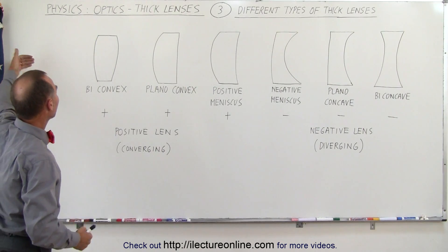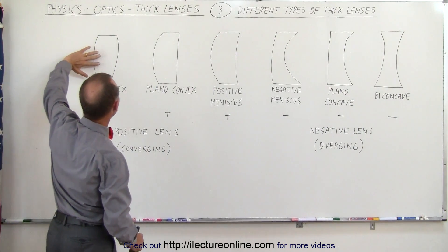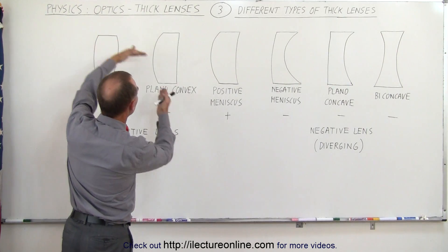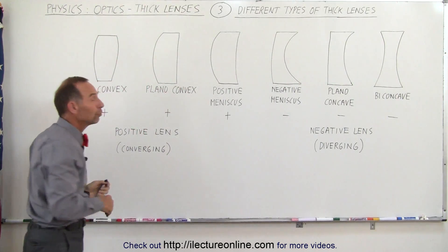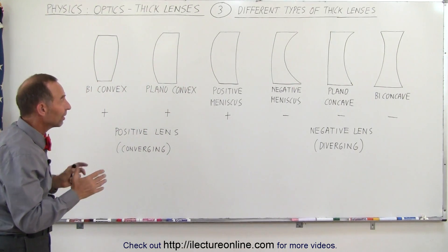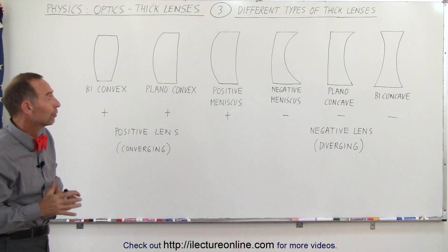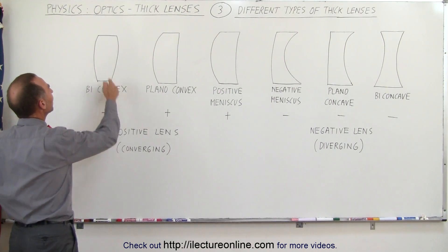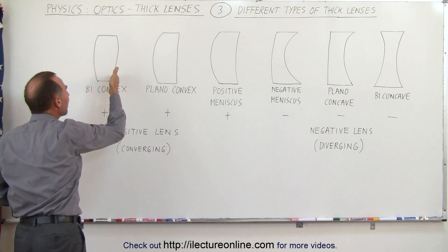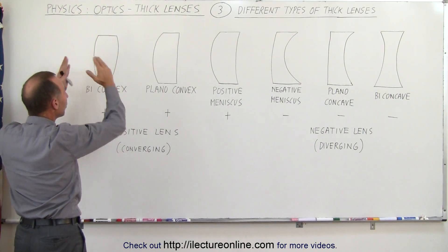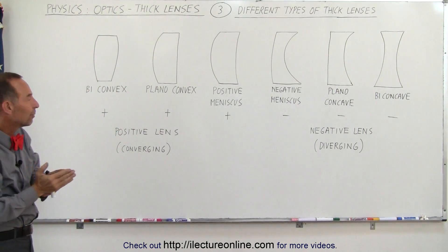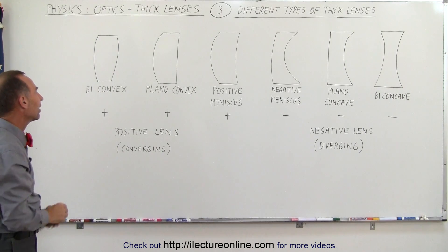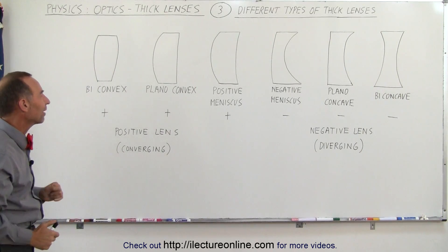In all three cases, any rays that approach the lens from the left and travel through the lens will converge on the other side. They do look different, but nevertheless, they're all three converging lenses. This is called the bi-convex lens because both the front and the back of the lens bulge outward — we consider that to be convex, so bi means both sides bulging out: bi-convex.